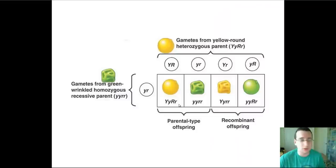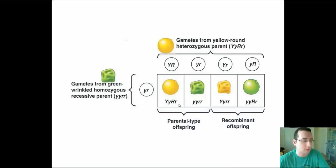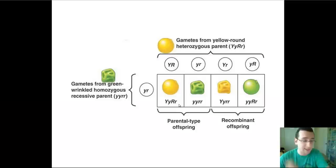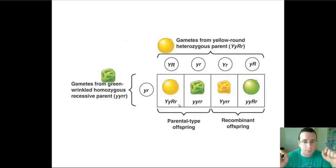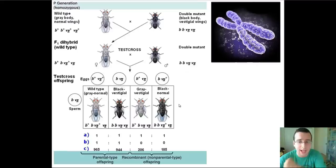Mendel used to think that traits were completely independent from each other — that the color of the pea plant and the shape of the pea itself would not be affected by the other trait. In other words, what happens to one trait does not determine what happens to the other trait. That goes back to the idea of independent assortment, tied to the separation of homologs in a random way during meiosis. Except that Mendel was kind of wrong.